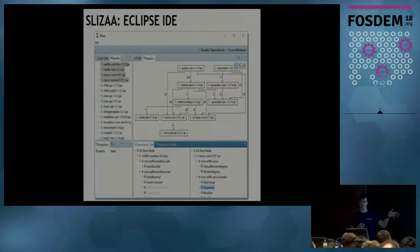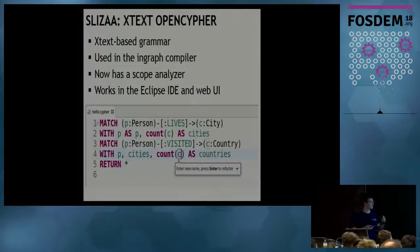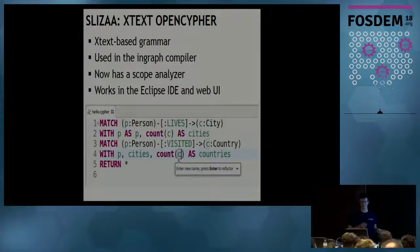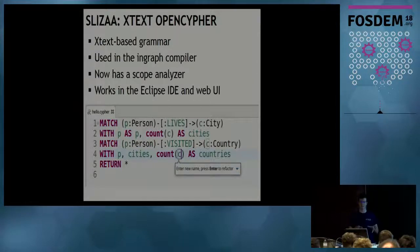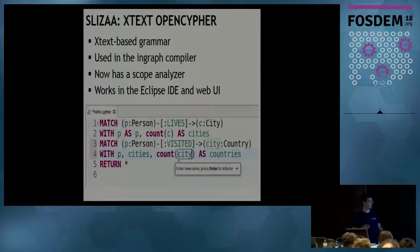Slicer has an Eclipse-based IDE with a grammar-based Cypher editor. As part of the InGraph project, we managed to extend that grammar with new features introduced in the OpenCypher language recently, and added a scope analyzer. Xtext is quite independent from Eclipse so you can run it in the web UI — this editor allows you to refactor Cypher queries correctly, so if you change a variable name it traces it through the entire query.